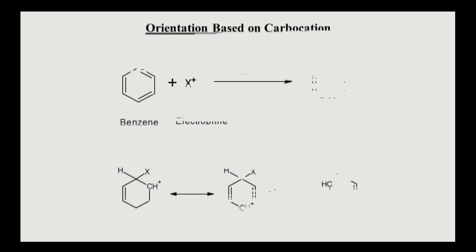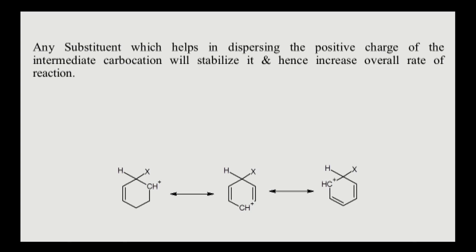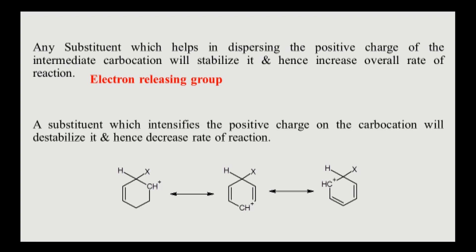Any substituent which helps in dispersing the positive charge of the intermediate carbocation will stabilize it and hence increase the overall rate of reaction. Such a group is called an electron-releasing group. Any substituent which intensifies this positive charge on the carbocation will destabilize it and hence decrease the rate of reaction. Such groups are called electron-withdrawing or electron-attracting groups.